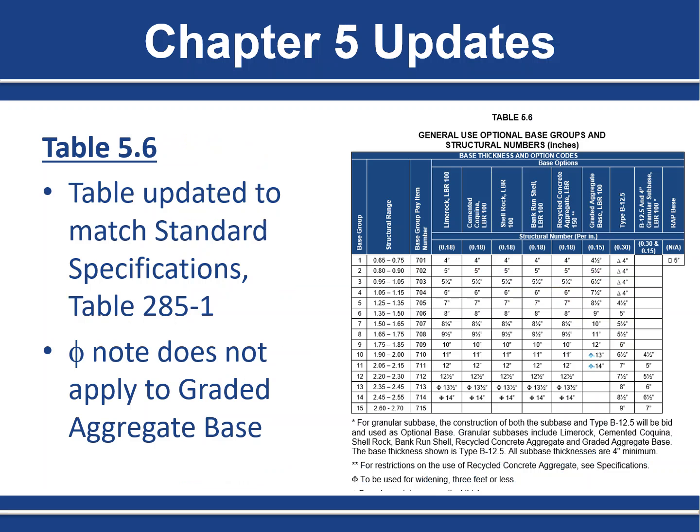Moving on to Chapter 5, the first change is to Table 5.6. There was an inconsistency between the flexible manual and the standard specifications regarding the applicability of the note stating to be used for widening three feet or less. This note should not apply to graded aggregate base, so we deleted the symbol in the table so the note no longer applies to graded aggregate base, making us consistent with the standard specs.